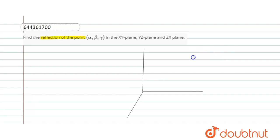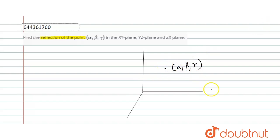First of all, let me place the point in the first octant — because in 3D the total space is divided into octants. I am placing the point alpha, beta, gamma in the first octant.